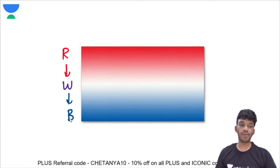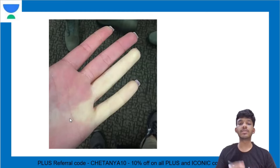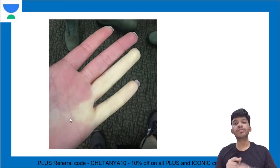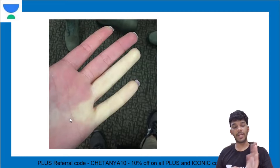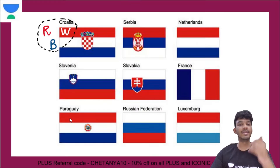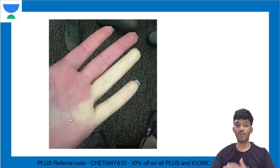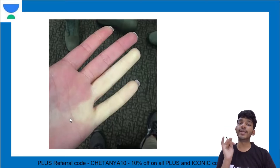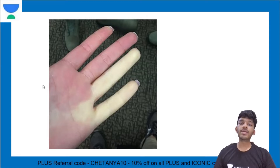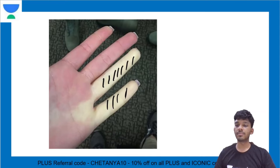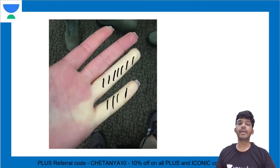Raynaud's phenomenon, if you have a look at it in a very simple form — normally if you look at my hand, it looks pretty normal. Now there are these color changes that occur in the hand, and we'll try to understand why they occur. Raynaud's phenomenon involves biphasic changes. Normally the hand is reddish with decent blood supply. Then the distal part starts to become whitish due to vasoconstriction.